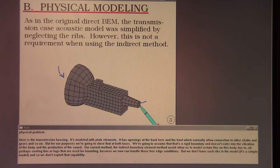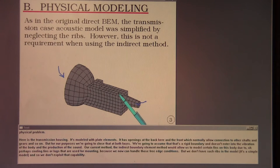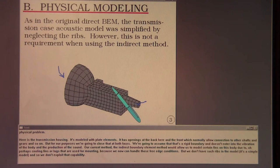Our current method, the indirect boundary element method, would allow us to model certain fins on this body due to perhaps cooling fins or lugs that are used for mounting, because we now can handle those free edge conditions. But we don't have such ribs in the model. It's a simple model and so we don't exploit that capability.